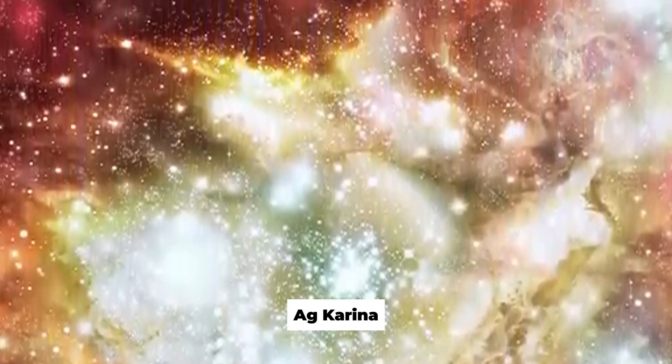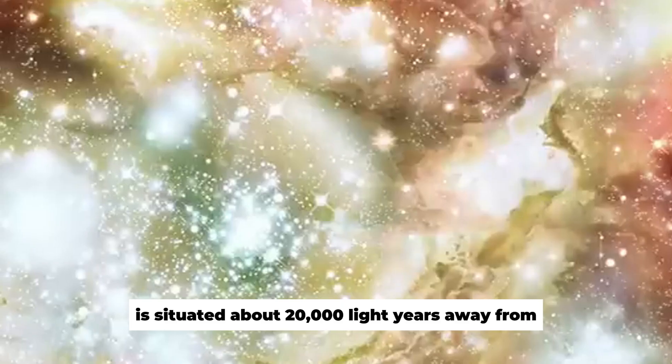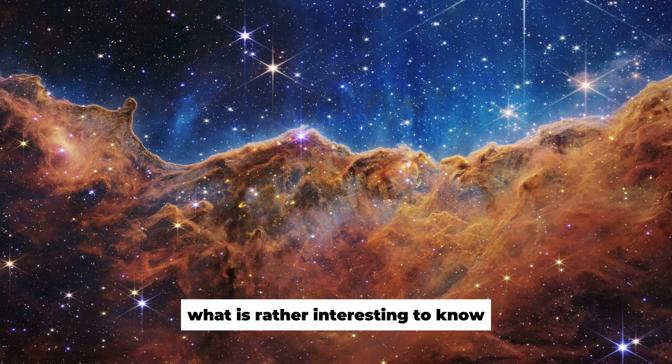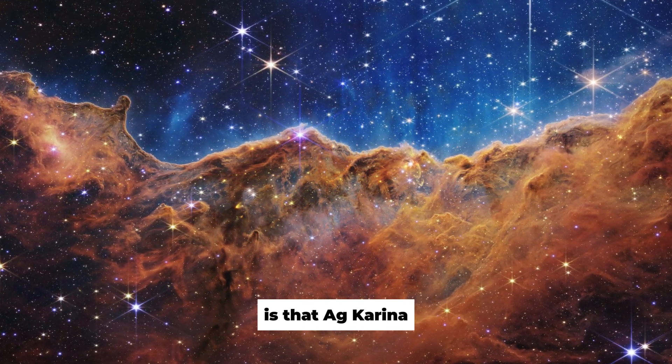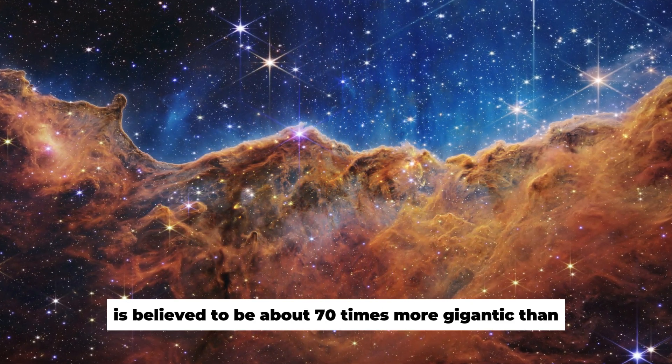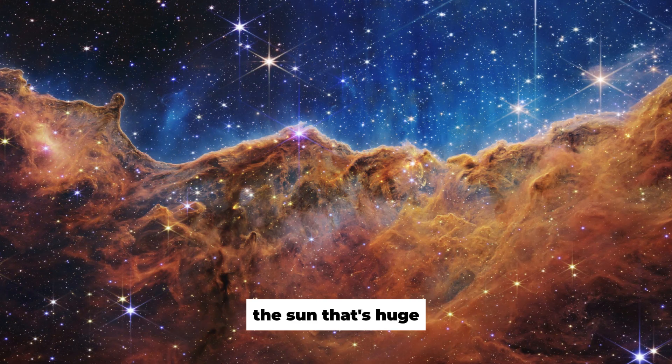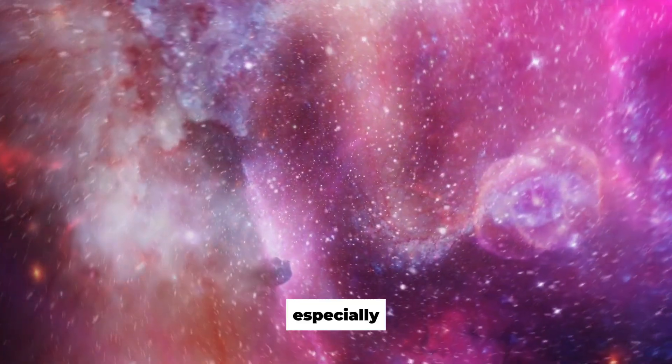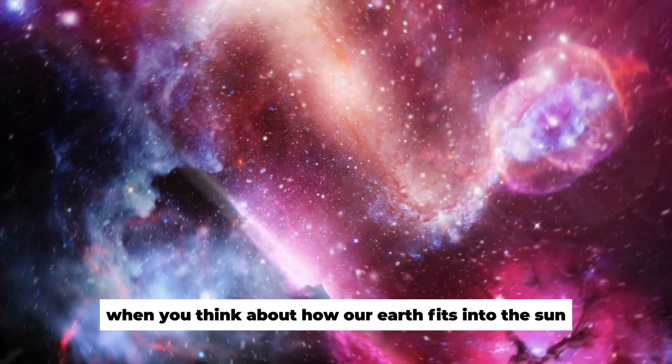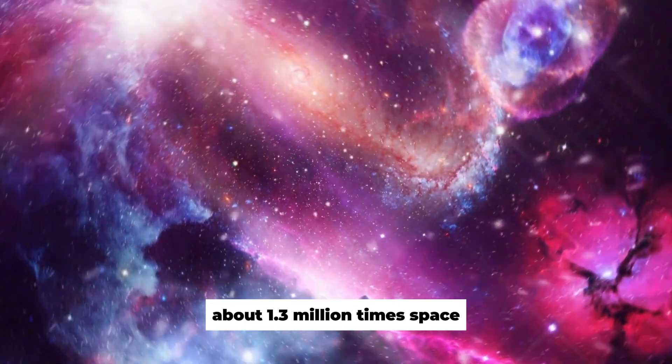A.G. Karina is situated about 20,000 light-years away from our Milky Way galaxy. What is rather interesting to know is that A.G. Karina is believed to be about 70 times more gigantic than the Sun. That's huge, especially when you think about how our Earth fits into the Sun about 1.3 million times.